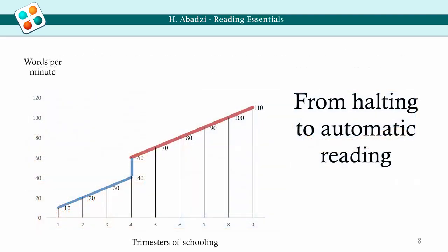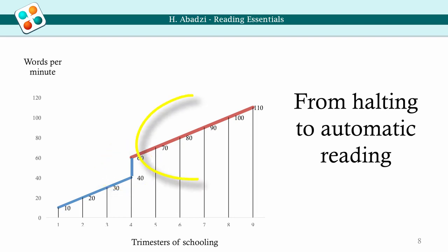Therefore, reading fluency does not develop in a linear fashion — a graph could describe it as shown in the slide. After takeoff, the eyes take in five letters at once in about 250 milliseconds. The brain identifies words, and each word or phrase becomes an item. Then people can't help but read, and they can focus on the message rather than the print.